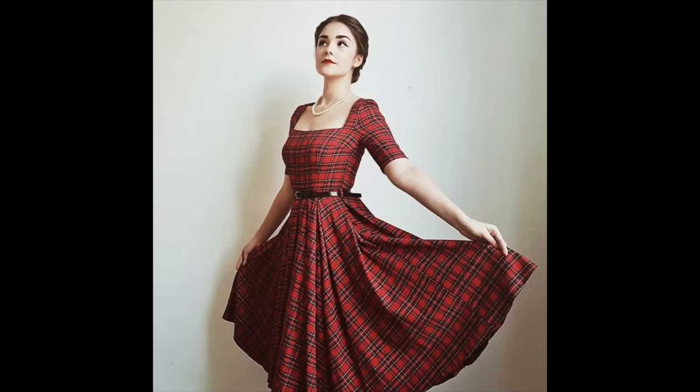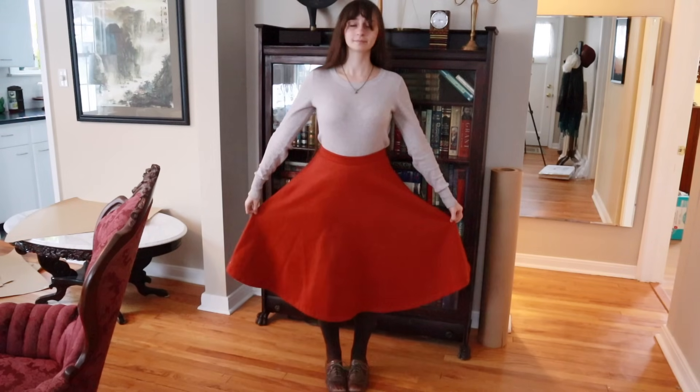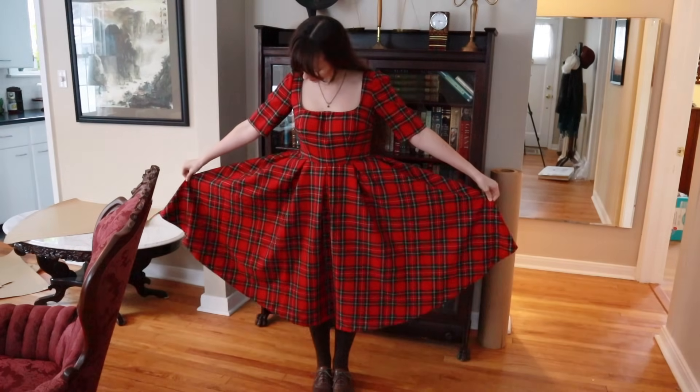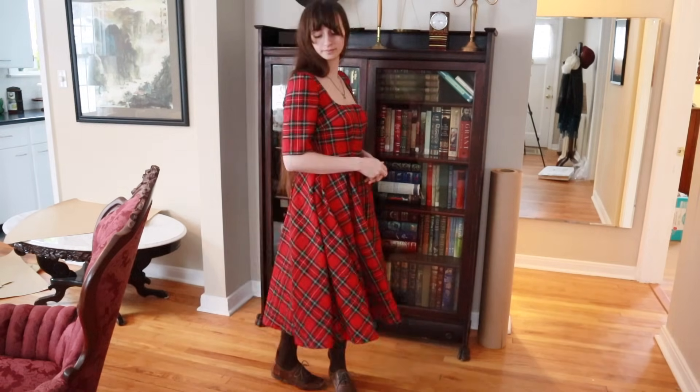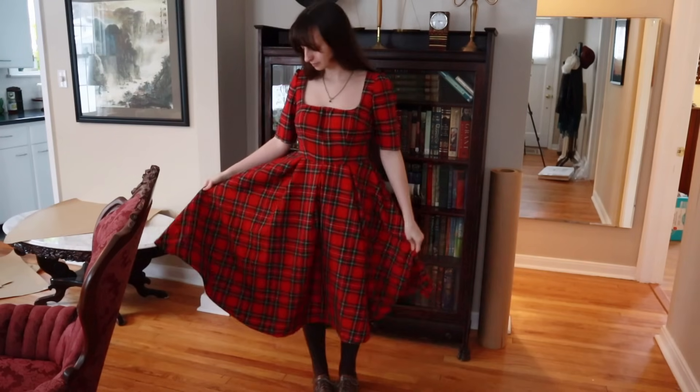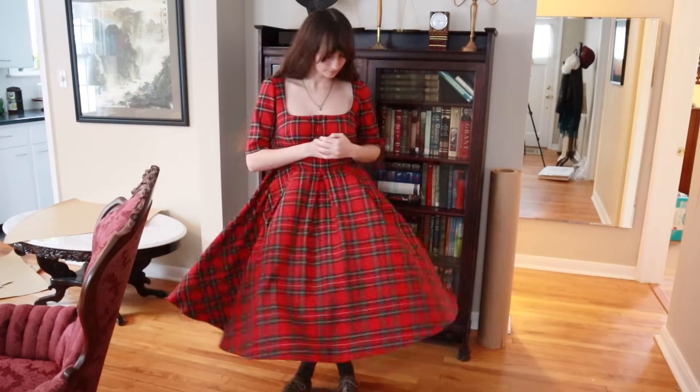This will result in a much fuller skirt. For example, both this orange skirt and this plaid dress are technically half circle skirts, but the plaid skirt has a larger waist that was pleated down, giving it a nice design detail in the pleats, but also making it much fuller at the hem.